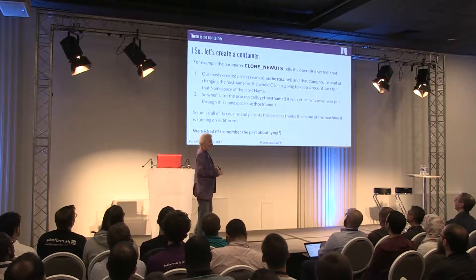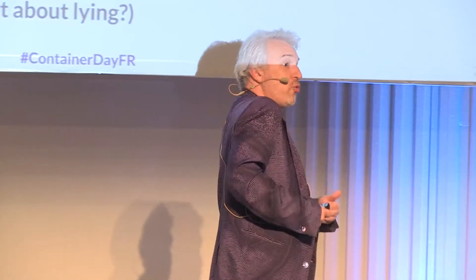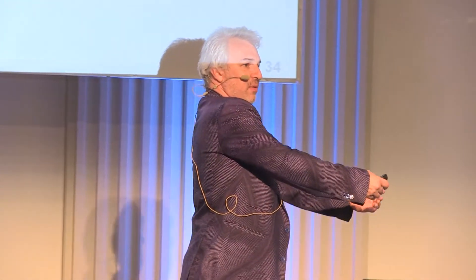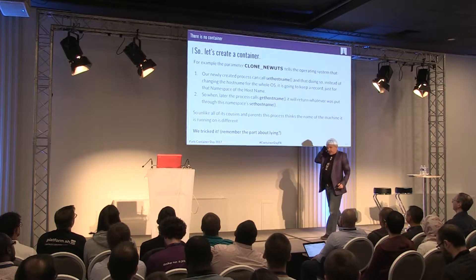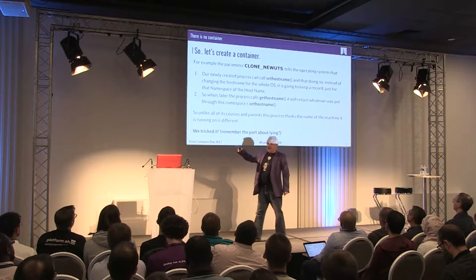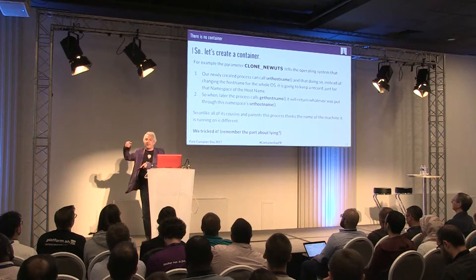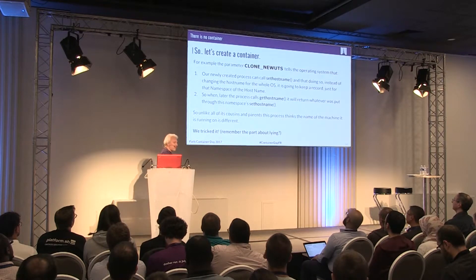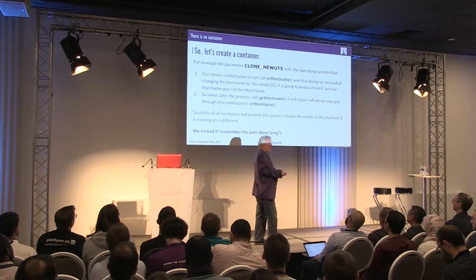For example, one of the nice ones is CLONE_NEWUTS. This one basically says: when you call system calls like sethostname, it's going to be only for you and your namespace. It's the same system call as you would call normally from outside the container, but it means that next time anyone with this namespace calls gethostname, give them whatever I put in the sethostname call. So suddenly we have a process — we have tricked this process, and it doesn't see the same reality as the other processes in the system.